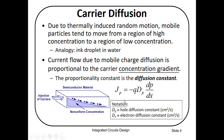Carrier diffusion: in diffusion, carriers move from higher concentration to lower concentration. The thermally induced random motion causes mobile particles to tend to move from a region of higher concentration to a region of lower concentration. Current flow due to mobile charge diffusion is proportional to the carrier concentration gradient. Here you can see the carrier concentration gradient, and D_p is the diffusion constant.